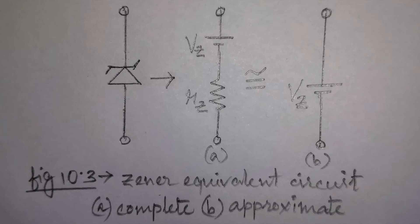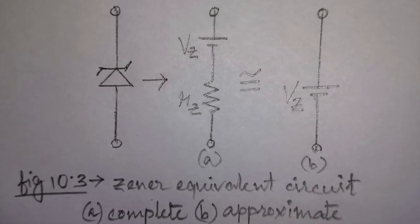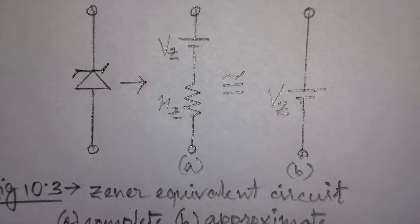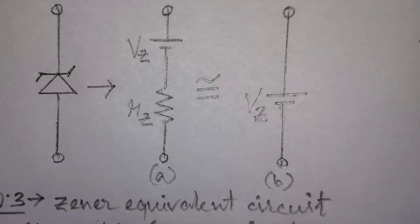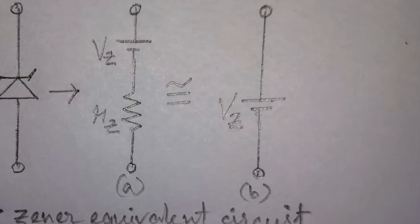The complete equivalent circuit of the Zener diode in the Zener region includes a small dynamic resistance RD and a DC battery equal to the Zener potential, as shown in figure 10.3. For all applications, the external resistors are assumed much larger in magnitude than the Zener resistor. Figure 10.3B shows that the equivalent circuit may be assumed to be only a voltage, that is, VZ.